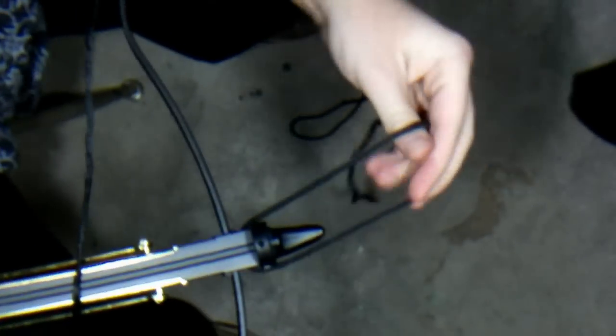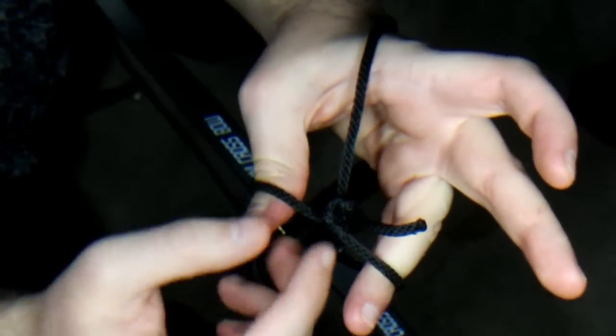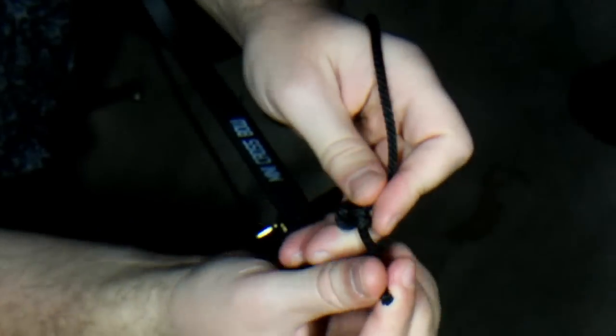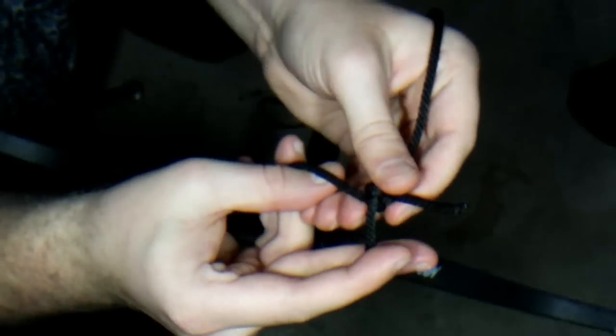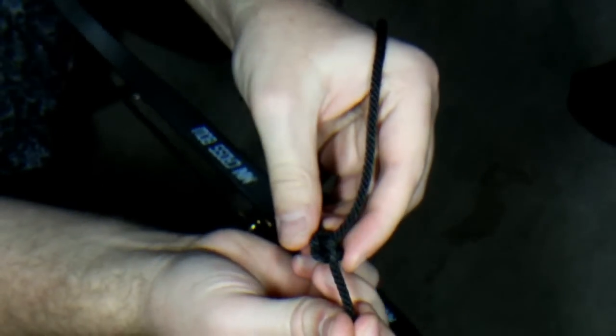You end up making, with the loop that's on the end right here made out of string, you end up making kind of a cheaper version of this right here. You can put your foot inside of the string and then you can pull the bow back. So I'm going to do that right now. So I should mention that the string requires at least 80 pounds pressure, at least I'd say at least 100 pounds. Basically what I did here is I tied a slip knot.